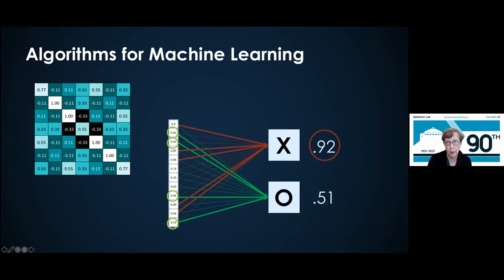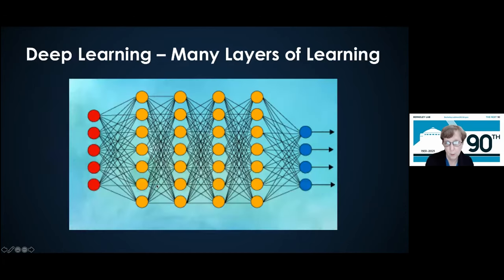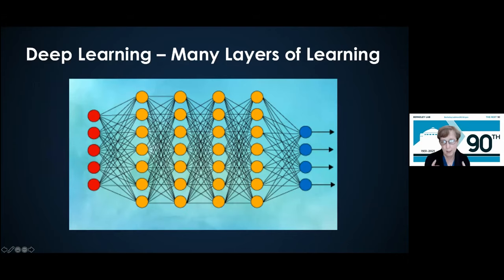All of that data from different patterns is put together, and we come out with a weight telling us how likely it is there's an X or an O in the image. This is what we call a layer in a neural net. In general, we often use deep learning algorithms with many layers. Going back to the cat example: the first layer might find diagonal and vertical lines, the second layer might find something like ears or triangles, and the next layer might find something that looks more like a cat.